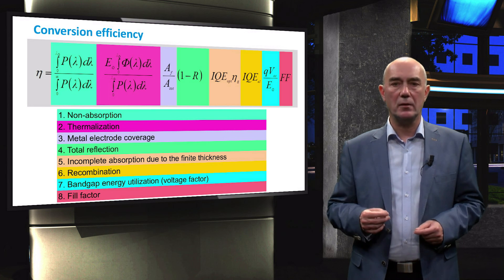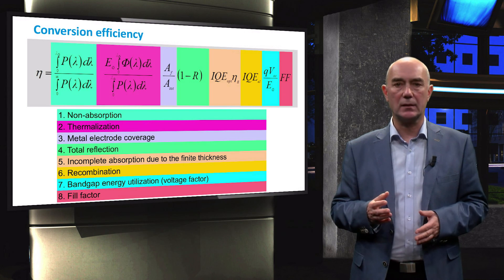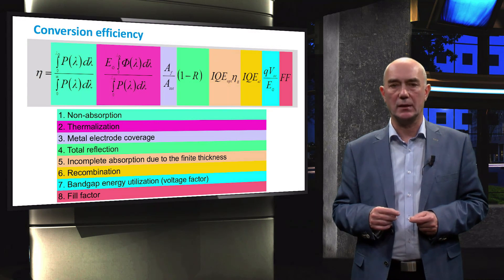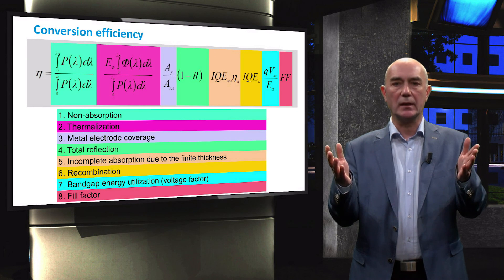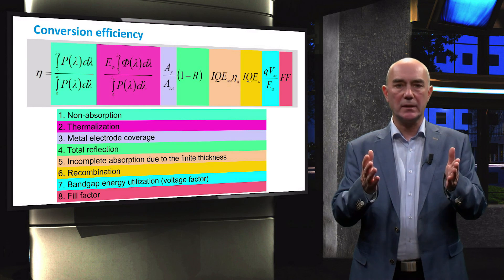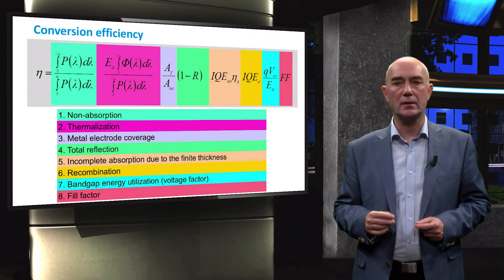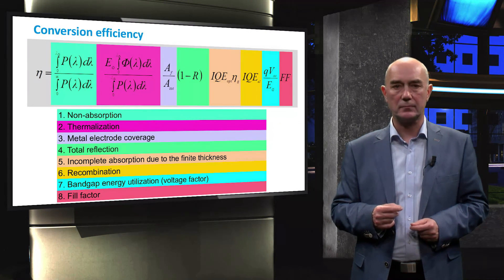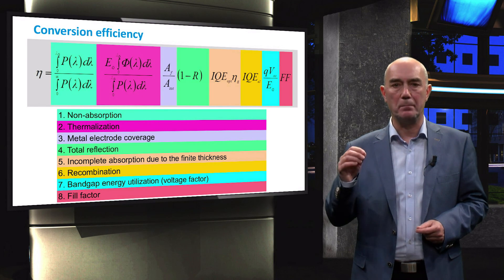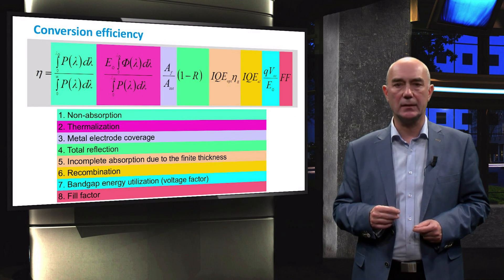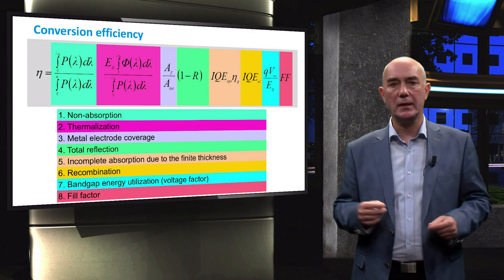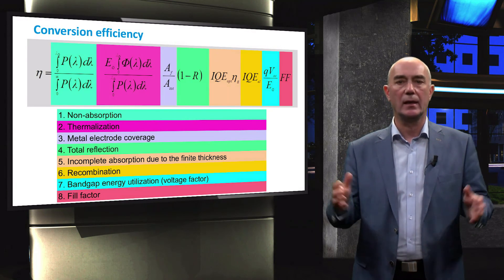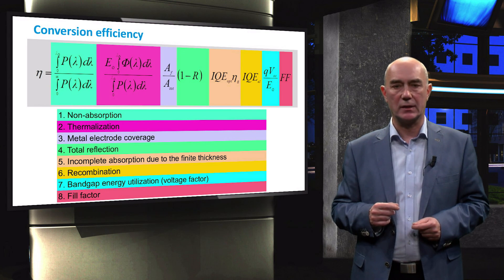In this video, we have presented a mathematical expression for solar cell conversion efficiency. This expression includes terms that take all the losses into account that we have discussed before. Now you can have a better understanding of how they together influence the performance of the solar cell and decrease its efficiency.